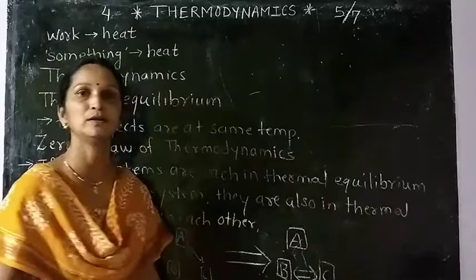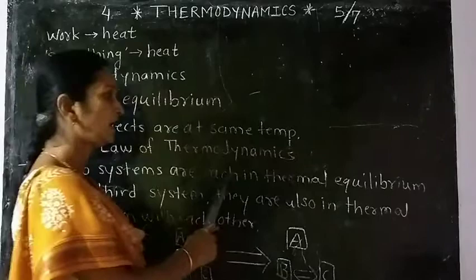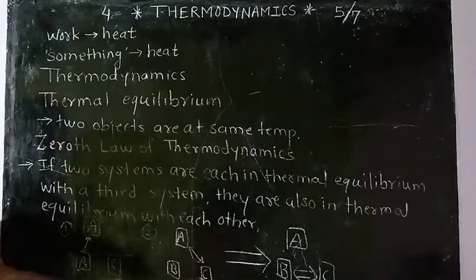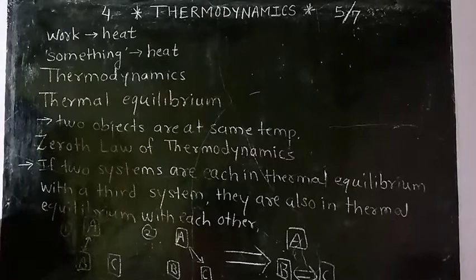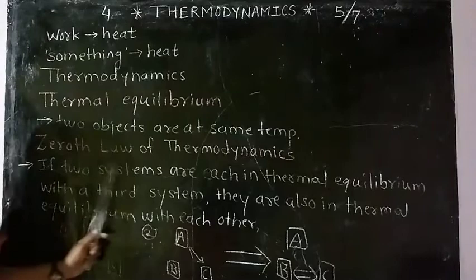If two systems — B and C — are each in thermal equilibrium with a third system A separately, then B and C are in thermal equilibrium with each other. This is nothing but the zeroth law of thermodynamics.